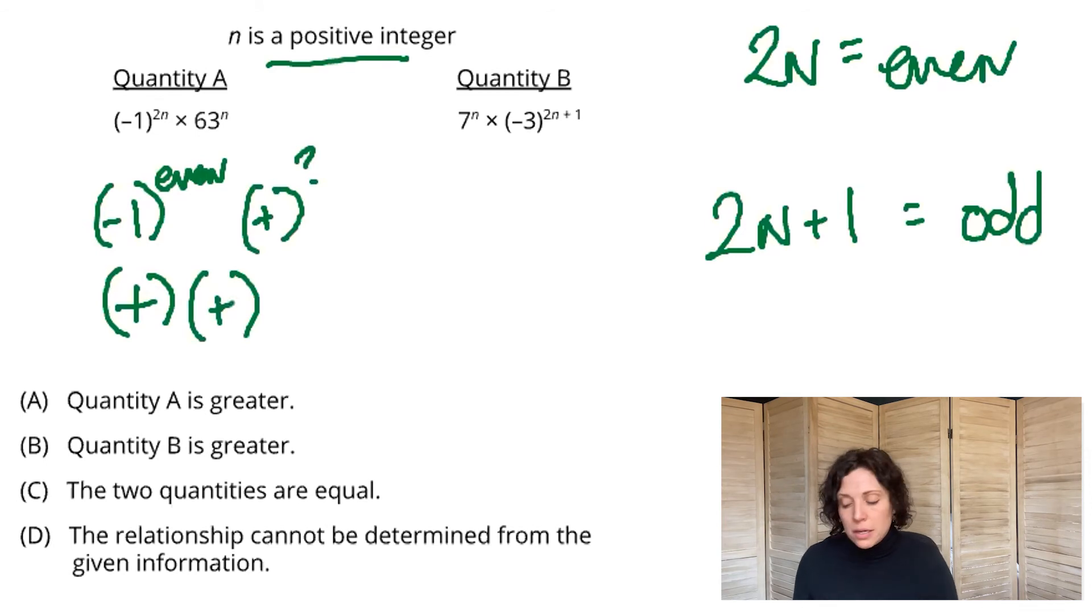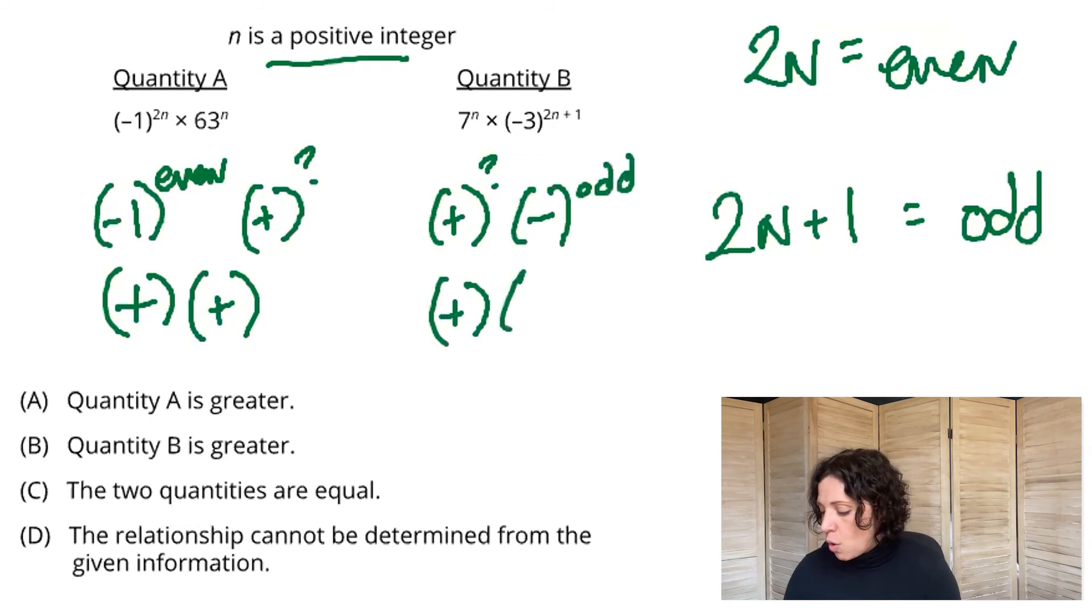Now on the right hand side for quantity B, we have our positive 7 raised to whatever power you want, staying positive, and then this negative number raised to an odd power is gonna keep its sign. And so on quantity B side, we have the product of a positive times a negative, which results in a negative, while quantity A has a positive times a positive, leaving us a positive.